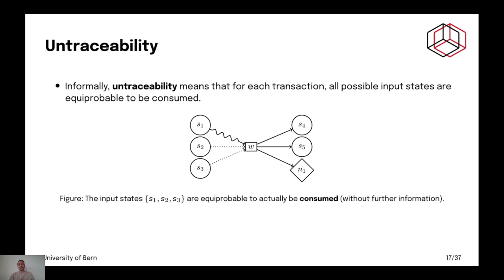Let's talk about untraceability first. So, untraceability means that if you consider one transaction, all the possible inputs are equiprobable to be consumed. In the case that we depict here, S1, S2 and S3 are all equiprobable to be consumed.